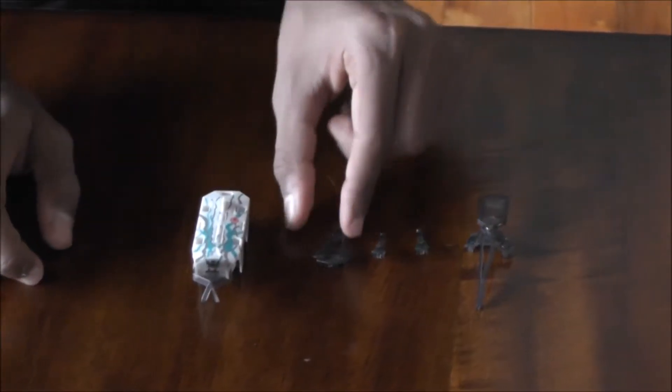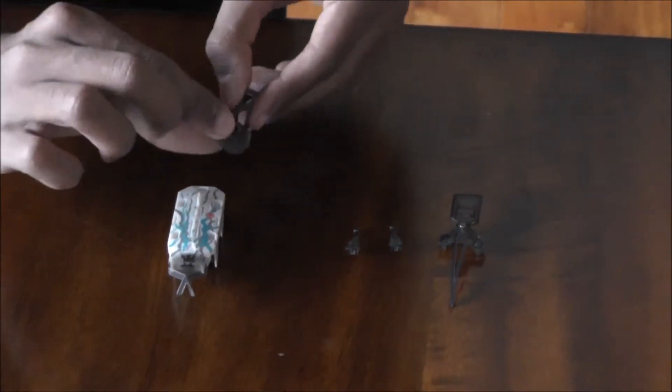You put your smaller piece, there will only be one of these, on the front. Usually it's the main weapon, but not on this bot. Then you'll put your longer piece on the back.